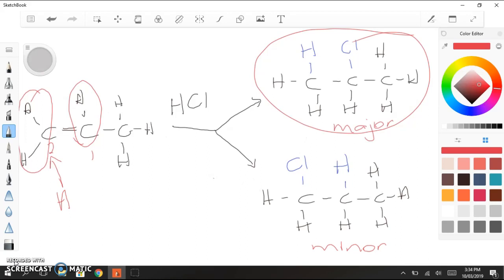Now, the easy way to try and remember which is which, Markovnikov's rule is sometimes known as the rich become richer. So the carbon that is already rich in hydrogens is going to become richer in hydrogens. So that's the way I always remember it.